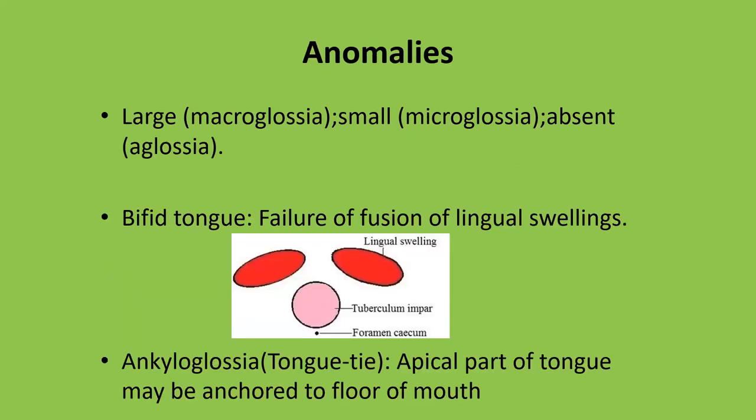The anomalies of the tongue include: macroglossia, where the tongue is large; microglossia, where it is small; and aglossia, where the tongue is absent. The embryological basis of the bifid tongue is due to failure of fusion of the two lingual swellings — when they don't unite, the tongue may be bifid.